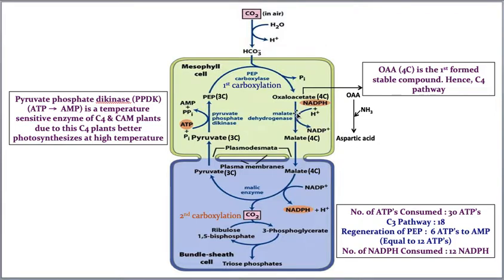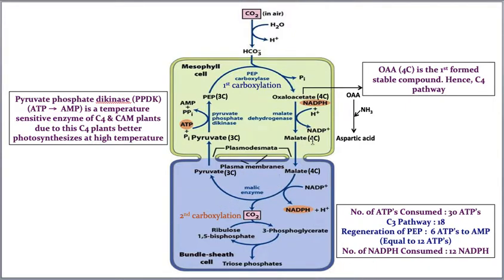In a few cases, oxaloacetic acid reacts with ammonia and converts into aspartic acid, also a 4-carbon compound. However, 95% of cases produce malate. Either malate or aspartic acid ultimately moves into the bundle sheath cells to continue the pathway.